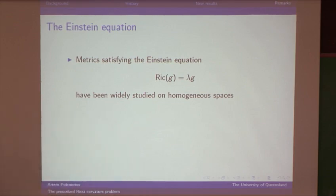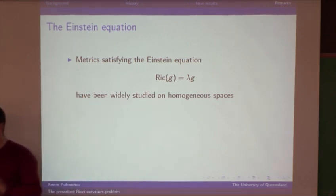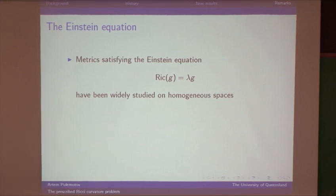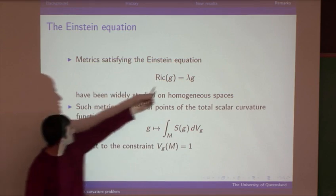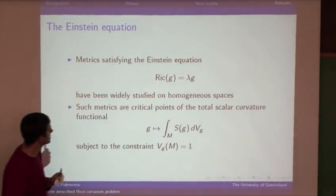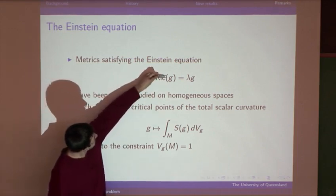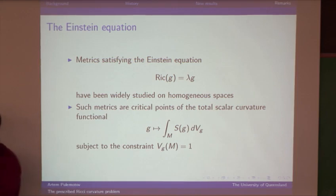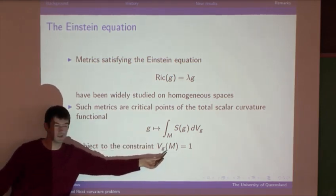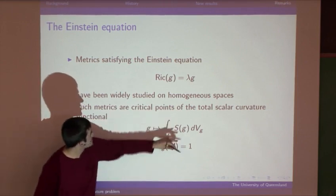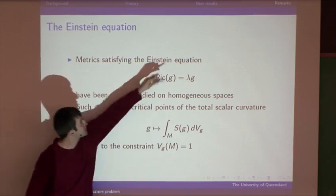When talking about the prescribed Ricci curvature problem on homogeneous spaces, it would be wrong not to mention Einstein metrics. The Einstein equation has been studied very thoroughly on homogeneous spaces, and one remarkable result is by McKenzie Wang and Wolfgang Ziller, who proved the existence of homogeneous Einstein metrics by exploiting the variational nature of the Einstein equation. It's well known that a Riemannian metric satisfies the Einstein equation if and only if it is a critical point of the total scalar curvature functional subject to a volume constraint.